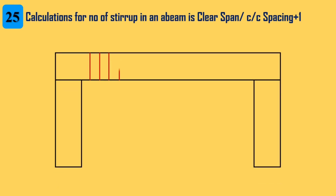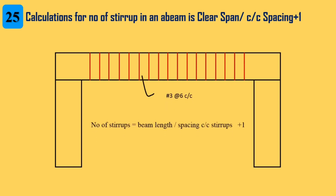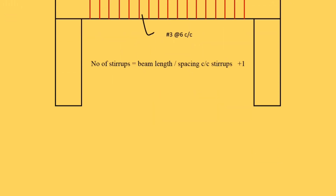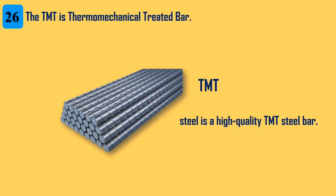25. Calculation for the number of stirrups in a beam: clear span divided by center-to-center spacing, plus 1. 26. TMT is thermo-mechanical treated bar — a high quality TMT steel bar.